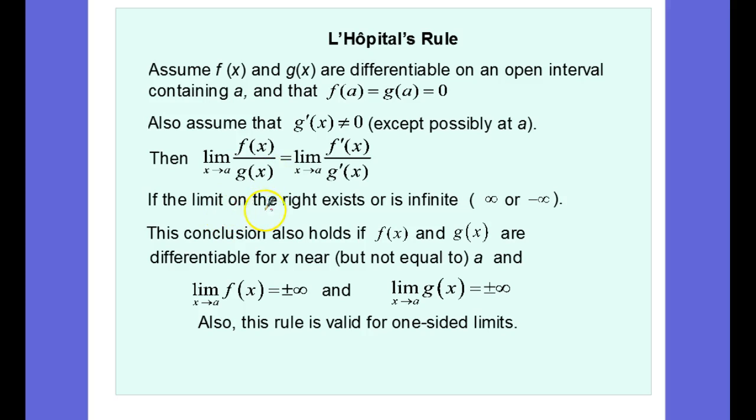Now, it says if the limit on the right side exists or is infinite, so either positive or negative infinity. So the conclusion also holds if f(x) and g(x) are differentiable for x near but not equal to a.